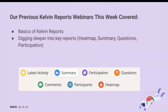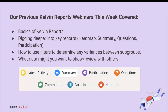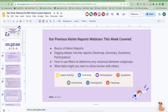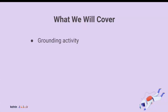We walked through digging deeper just yesterday, where we got specific with the heat map, the summary, questions, and participation — really talking about the ins and outs of all of those. We talked about using filters as a way to determine variances between subgroups, and what data you might want to show and review with others. That is not what we're covering today. The goal of our time together is to look at the step called "understand" and how you might act on what you understand to facilitate a group review of data.